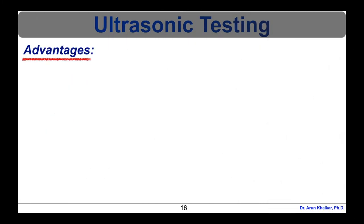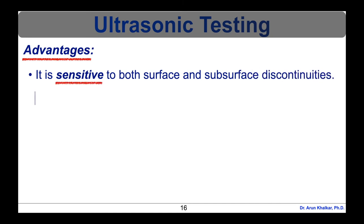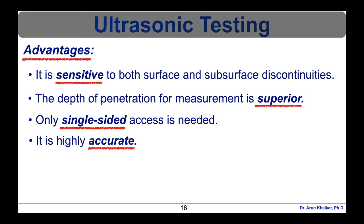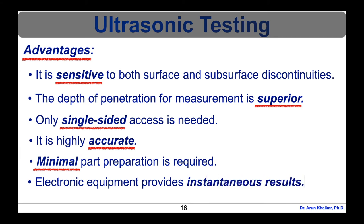Ultrasonic inspection is a very useful and versatile non-destructive testing method. Some advantages of ultrasonic inspection include: it is sensitive to both surface and subsurface discontinuities; the depth of penetration for flaw detection or measurement is superior to other NDT methods; only single-sided access is needed when the pulse echo technique is used; it is highly accurate in determining reflector position and estimating size and shape; minimal part preparation is required; electronic equipment provides instantaneous results; detailed images can be produced with automated systems; and it has other uses such as thickness measurement in addition to flaw detection. These are the several advantages of ultrasonic testing.